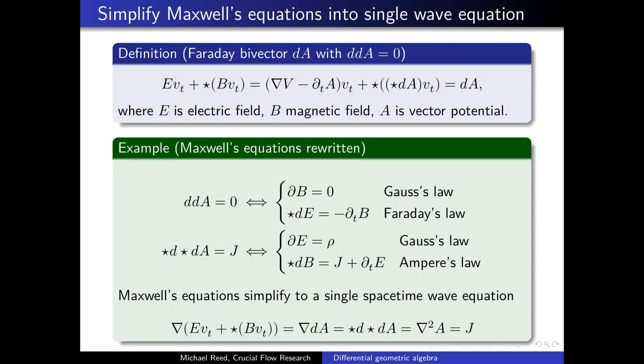Another very interesting and exciting aspect of geometric algebra is the simplification of Maxwell's equations into a single wave equation. We start by defining a Faraday bivector, which is the sum of an electric field and the complementary magnetic field components. And we observe that this is equal to dA, where A is a vector potential, and d is the exterior differential. Now, if we observe Gauss's law and Faraday's law and Ampere's law and compare it with the Faraday bivector, we observe that they can satisfy the same conditions when written in a certain way. And what we find then is actually that Maxwell's equations simplify to a single spacetime wave equation of the vector potential and the source term.